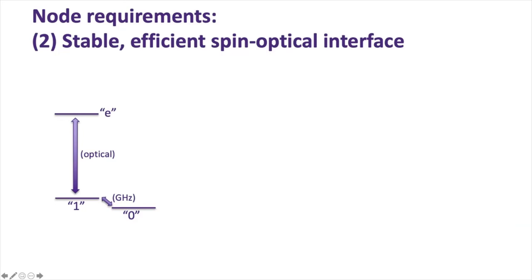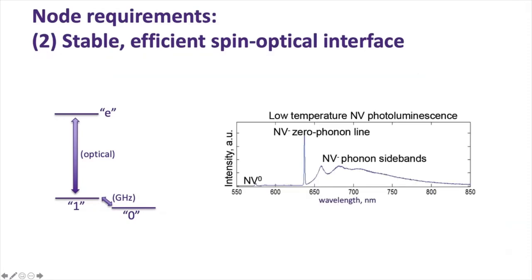Defects in crystals can range from picoseconds up to minute time scales, so there's a huge range depending on the defect and material. The next requirement beyond stable memory states is the optical transition. We typically excite the defect and look at the photoluminescence. For the nitrogen vacancy center, 637 nanometers is the transition of interest — a very sharp line called the zero phonon line — which has been used for creating small-scale quantum networks.